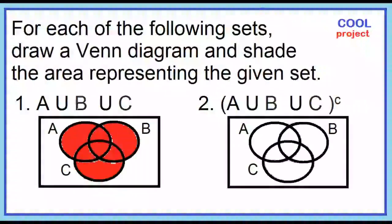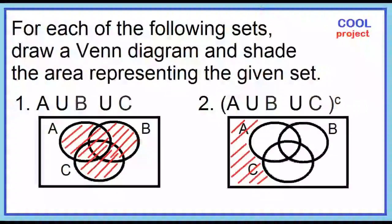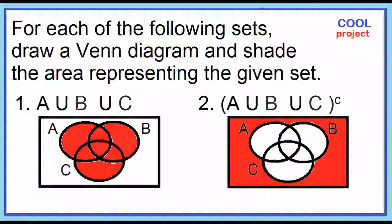Number two: the complement of the quantity A union B union C. This is the opposite of A union B union C. Shade the area excluding circles A, B, and C.